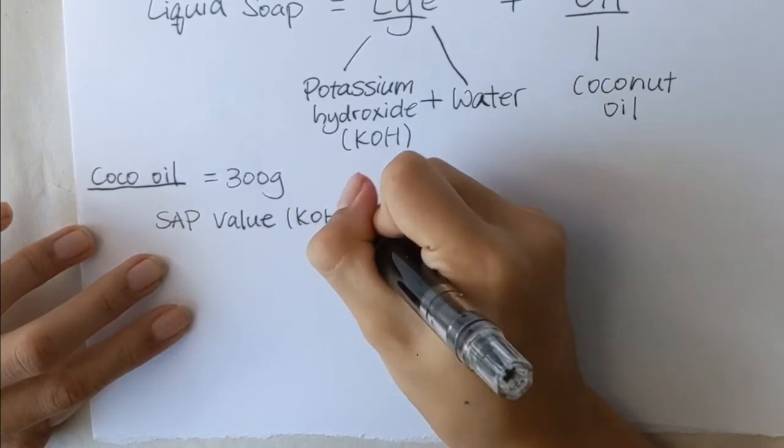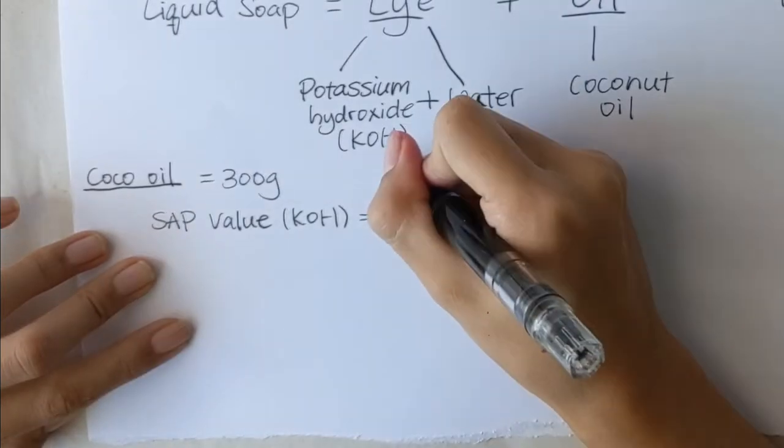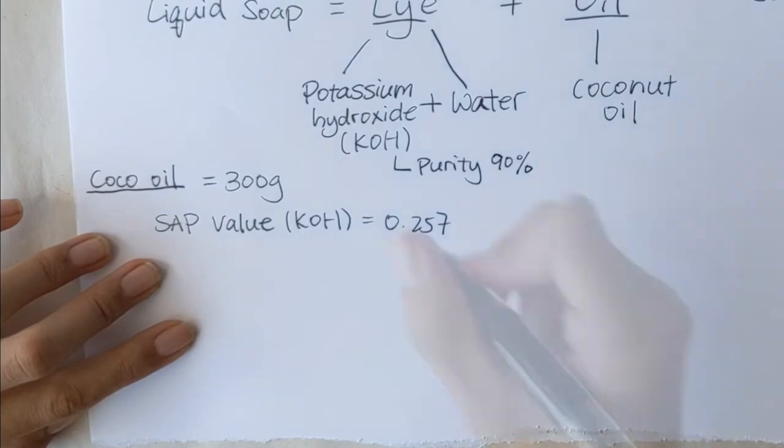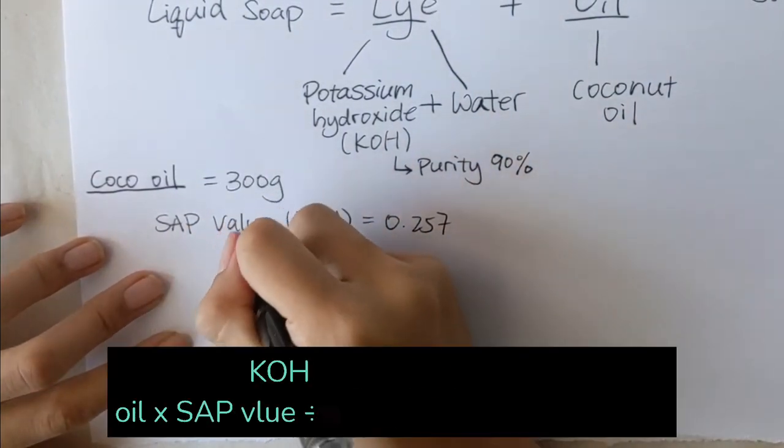Each oil has a different sap value, so please do your own research. The lye we will be using has a purity of 90%. Now we have everything we need to calculate the amount of potassium hydroxide necessary.